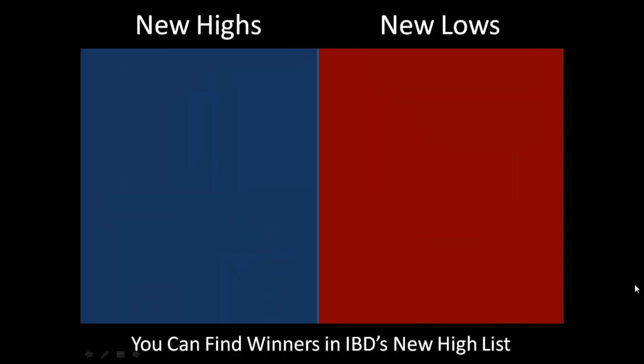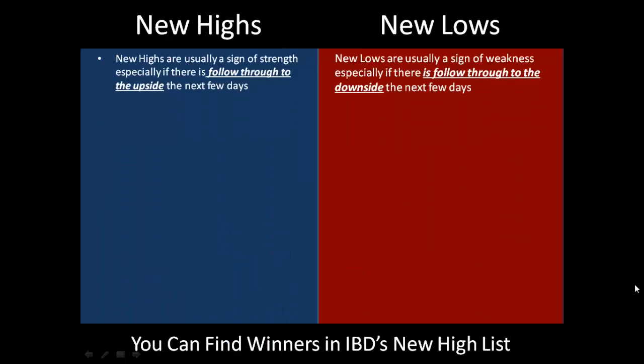Now let's take a look at new highs and new lows. New highs are usually a sign of strength and new lows are usually a sign of weakness. This is especially so if there's follow-through to the upside for new highs and to the downside for new lows. If you have a stock reaching new lows and continuing to make new lows, that's definitely a sign of weakness and you should be very careful.